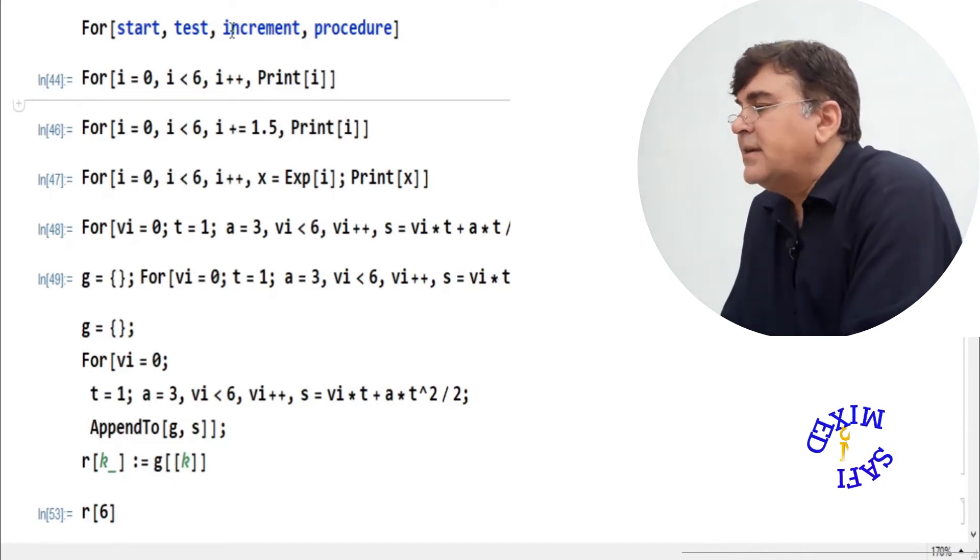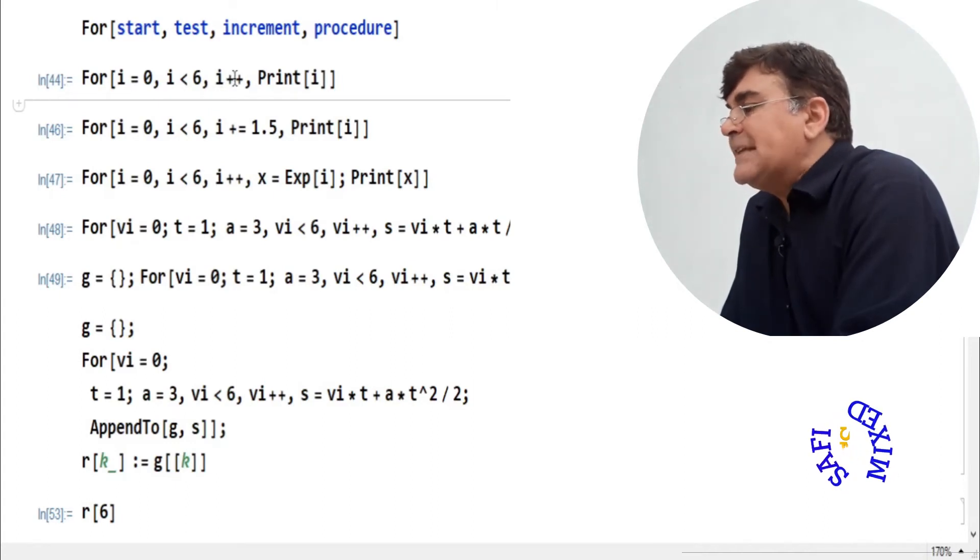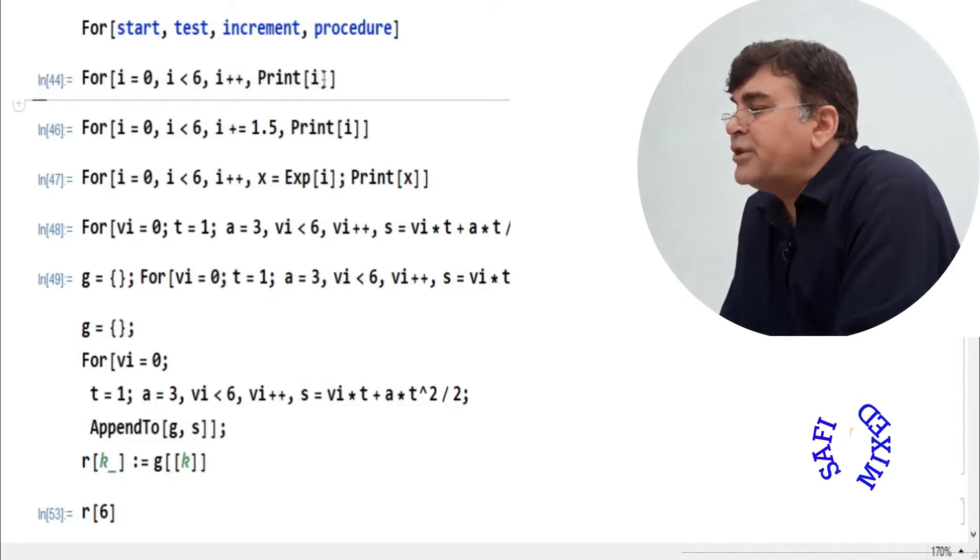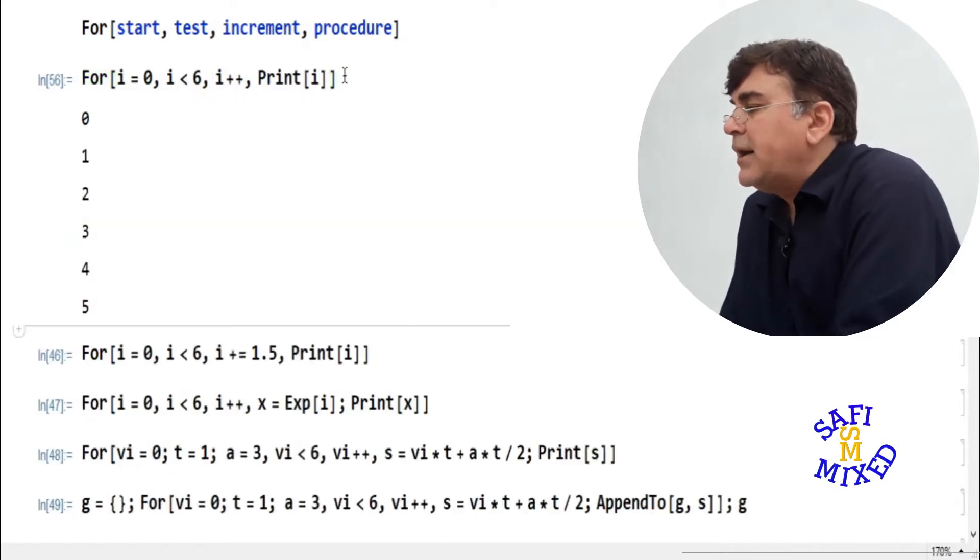In order to understand the purpose of these parts, I would like to first run the for loop for a trivial case. I asked Mathematica to start from I equal to zero such that the value of I should not be greater than six, then increase the value of I by an increment of one in each step, and finally print the values of I. In this case, I is called the iterator. Note that this notation is borrowed from C++.